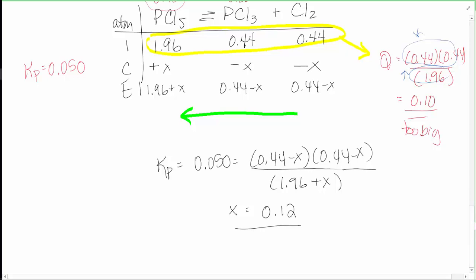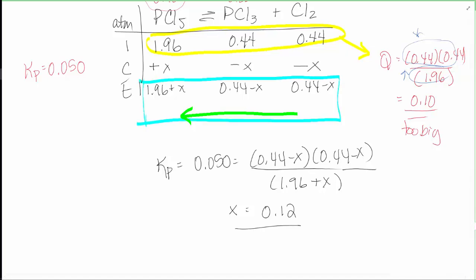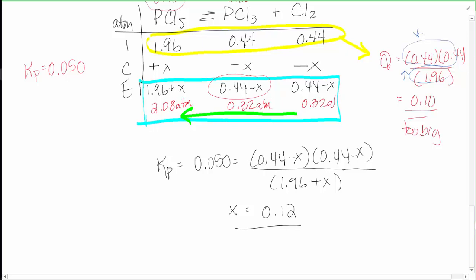Plugging into the equilibrium expression and solving for x, we get x ≈ 0.12. That's not the final answer — we plug x back in. PCl5 = 1.96 + 0.12 = 2.08 atmospheres, PCl3 = 0.44 − 0.12 = 0.32 atmospheres, and Cl2 = 0.44 − 0.12 = 0.32 atmospheres.